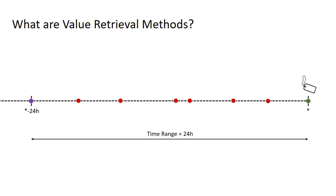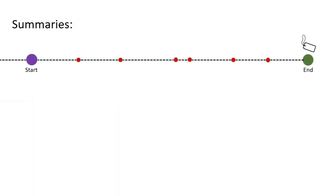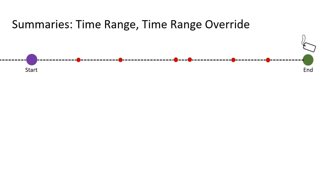We may want to request summary data over that time range, such as a time weighted average, event weighted average, maximum, minimum, or others. Three of the by-time configurations are used for summary calls, or calls that require a time range. Those three are time range, time range override, and not supported.